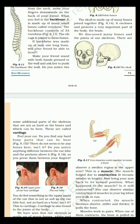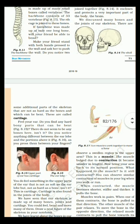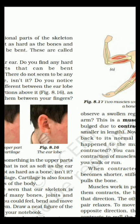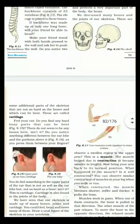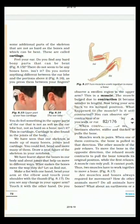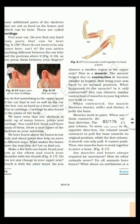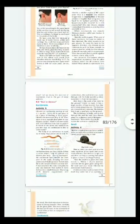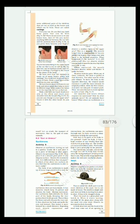There are some additional parts of the skeleton that are not as hard as the bones and which can be bent. These are called cartilage. The upper part of the ear has cartilage and this is ear lobe. This is the ear lobe.